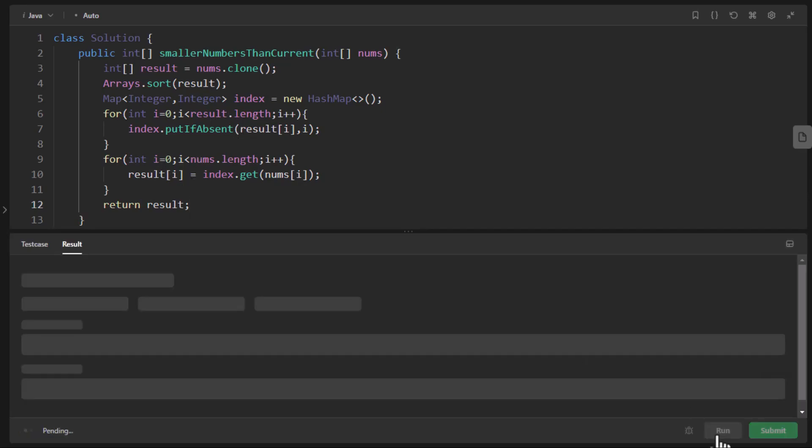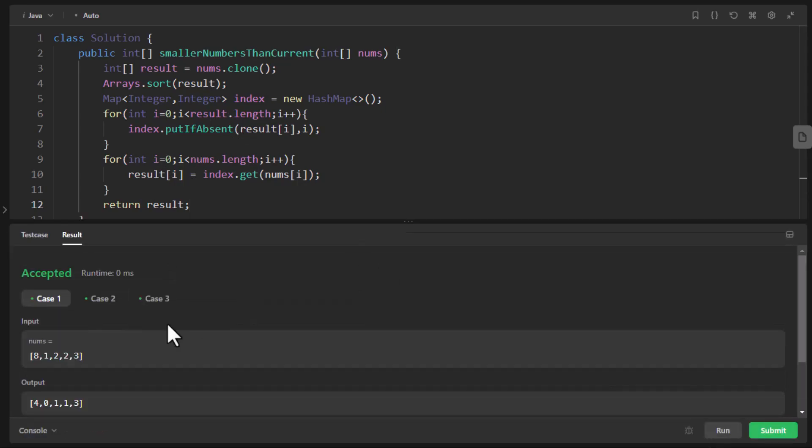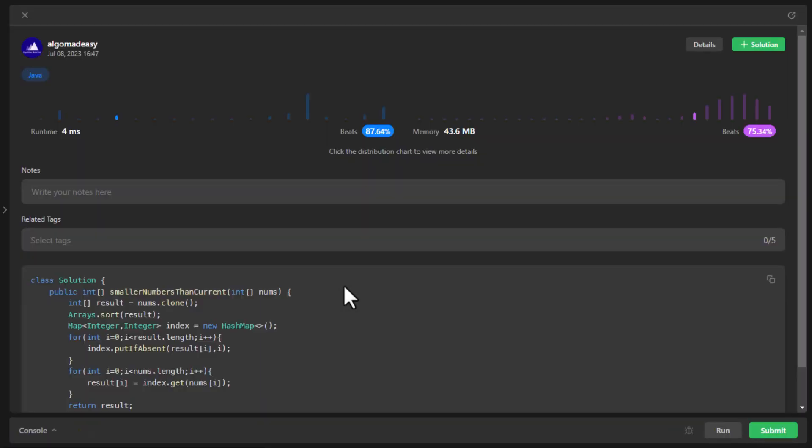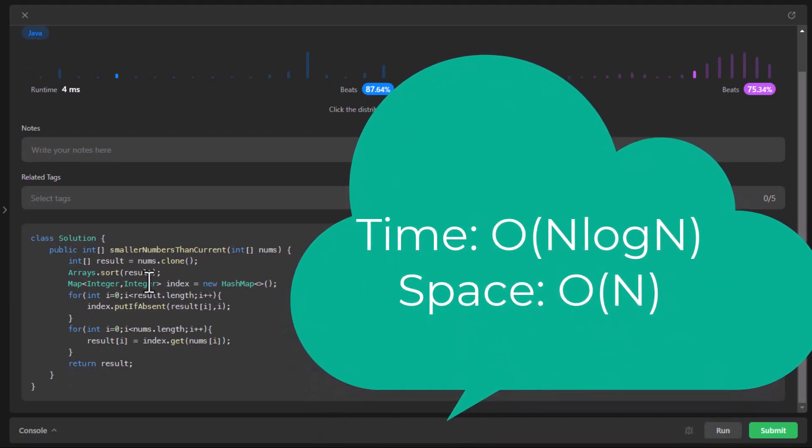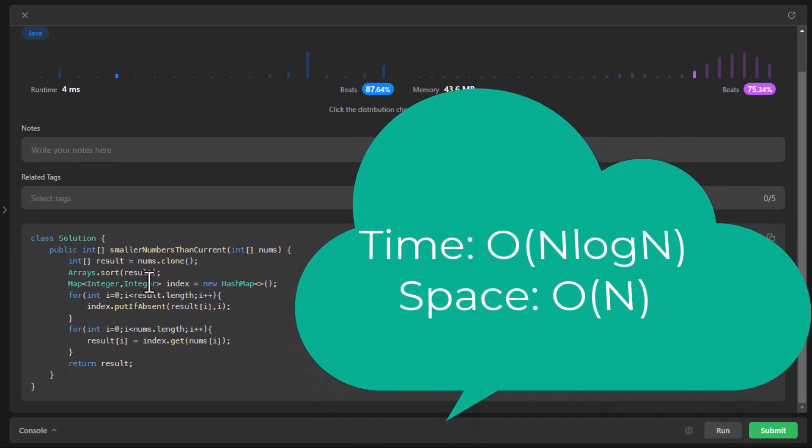Now let's try to run this code. So it ran successfully. Let's submit this. So it got submitted successfully. The time complexity in this case is O(n log n) down from n square, because we are doing a sorting while the space complexity is O(n) as we're using a results array.